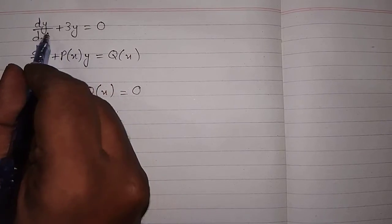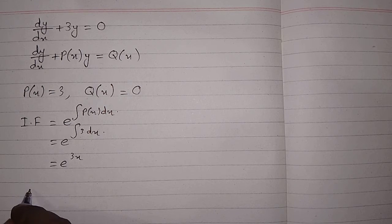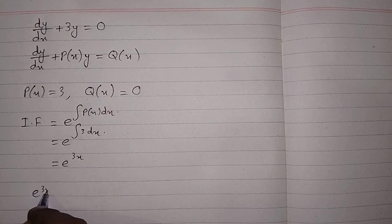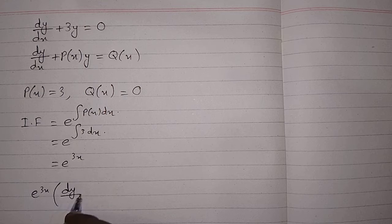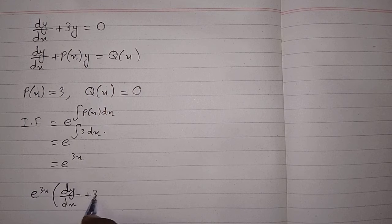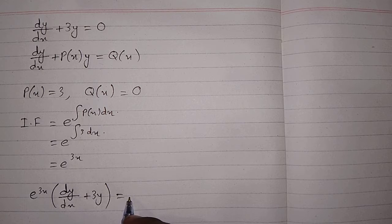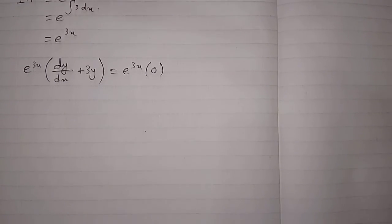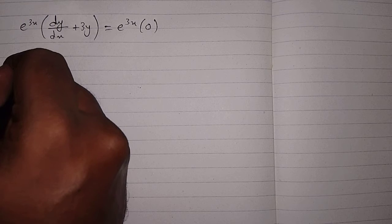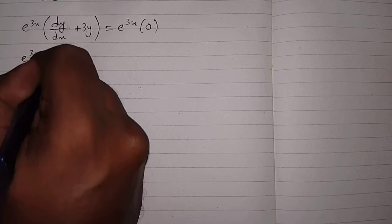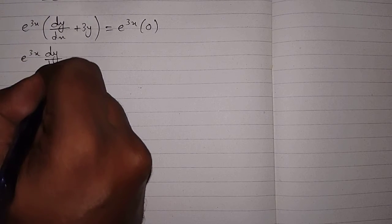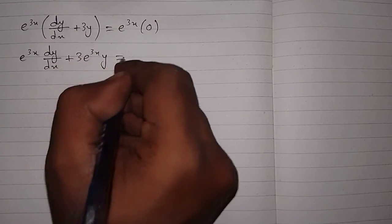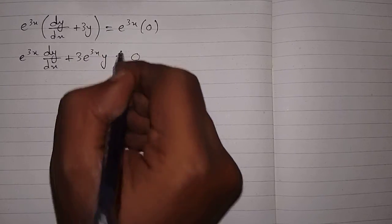Now we will multiply both sides of the given differential equation by e to the power 3x. So we have e to the power 3x multiplied by (dy/dx plus 3y) on the left side, and e to the power 3x multiplied by 0 on the right side. Expanding, we get e to the power 3x times dy/dx plus 3 times e to the power 3x times y equals 0.